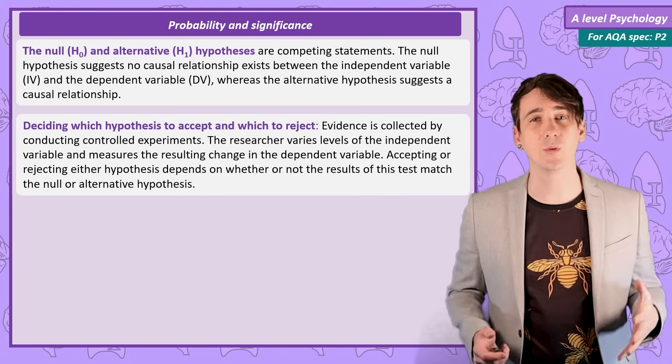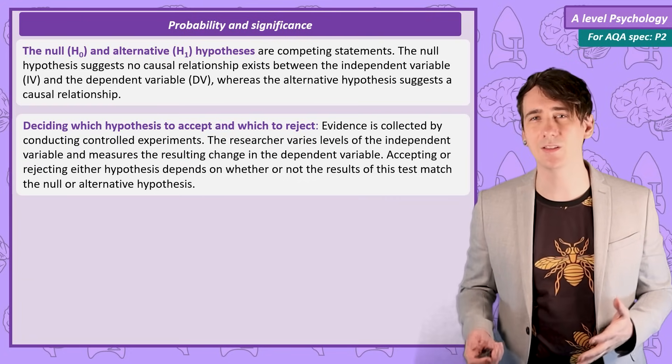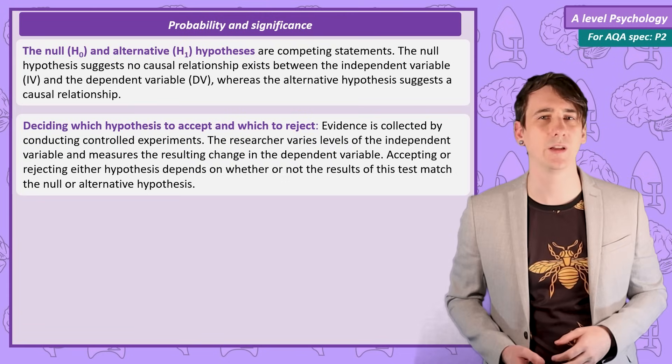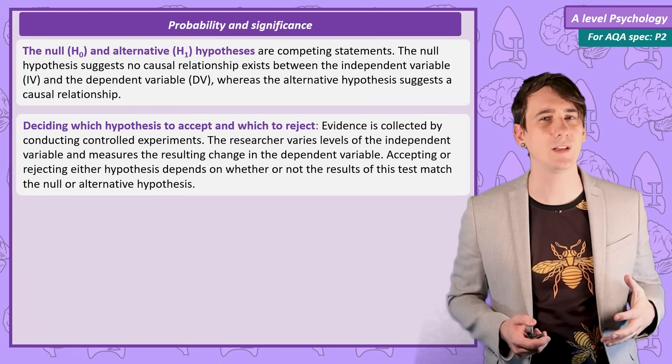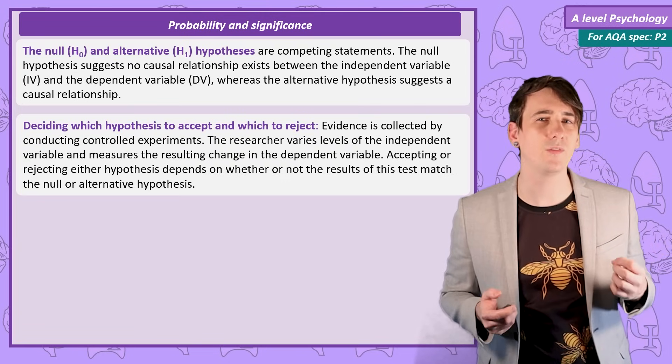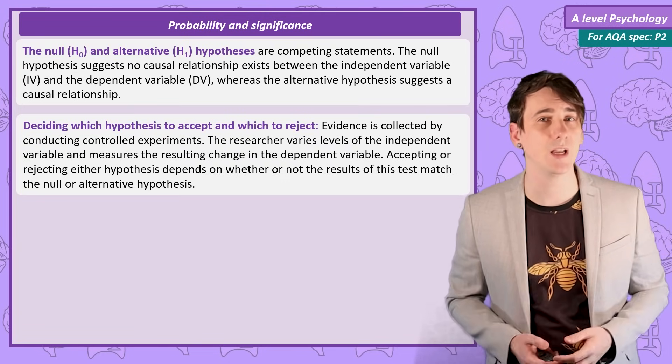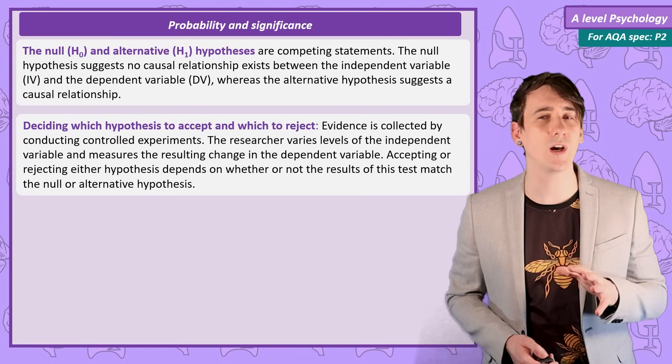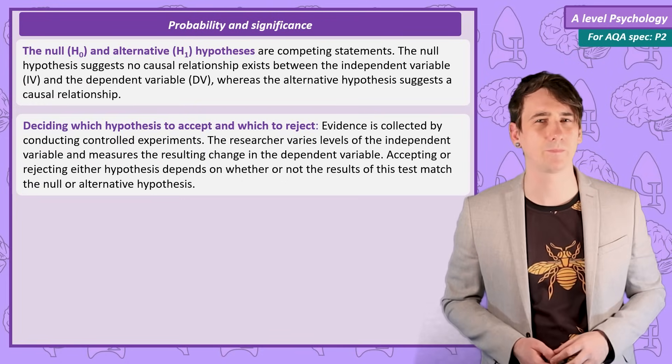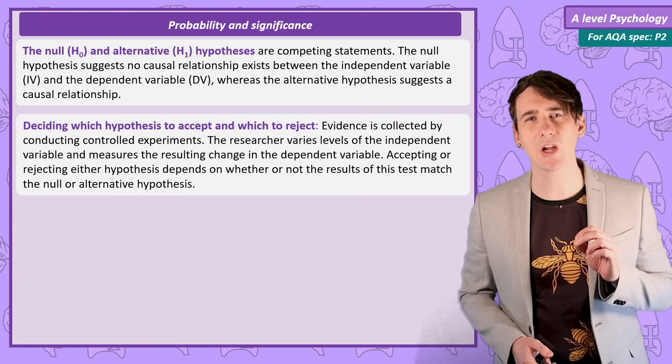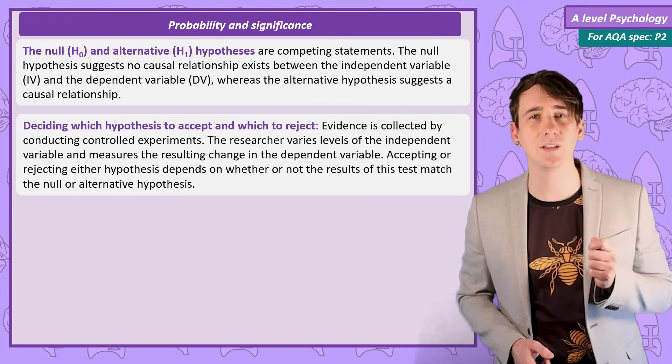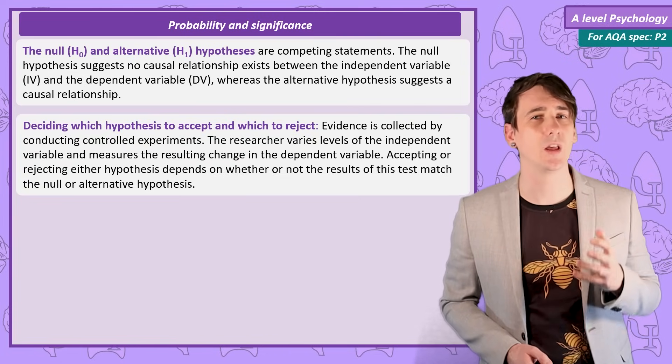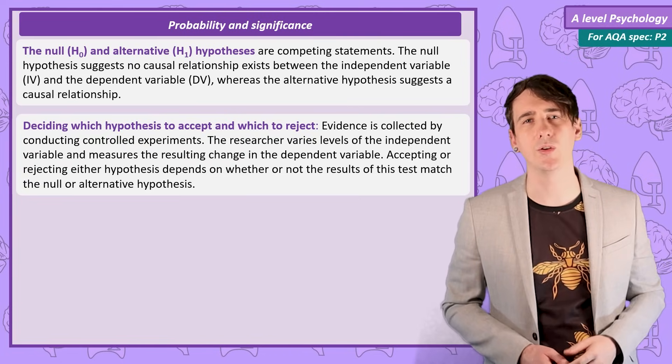The researcher needs to go out into the world and gather evidence before making that decision. In an experiment, the independent variable is manipulated, this is usually by artificially creating separate conditions where the only thing that has changed, or varied, is the independent variable, and any resulting change in the dependent variable is carefully measured. Once the researcher has their data, they need to make a decision about whether the data they have collected is actually strong enough evidence to accept the alternate hypothesis or not.